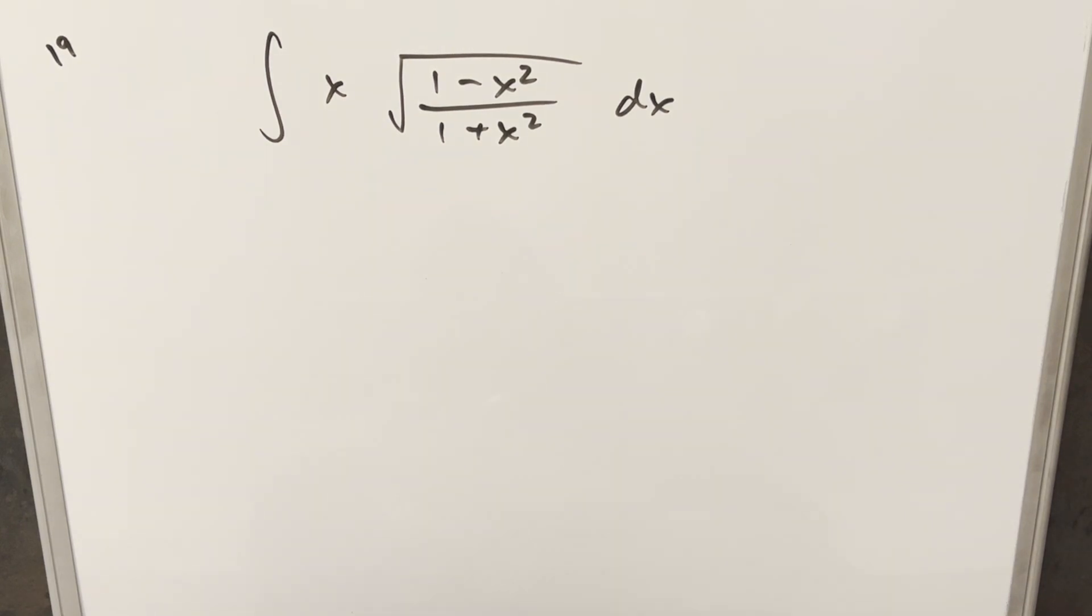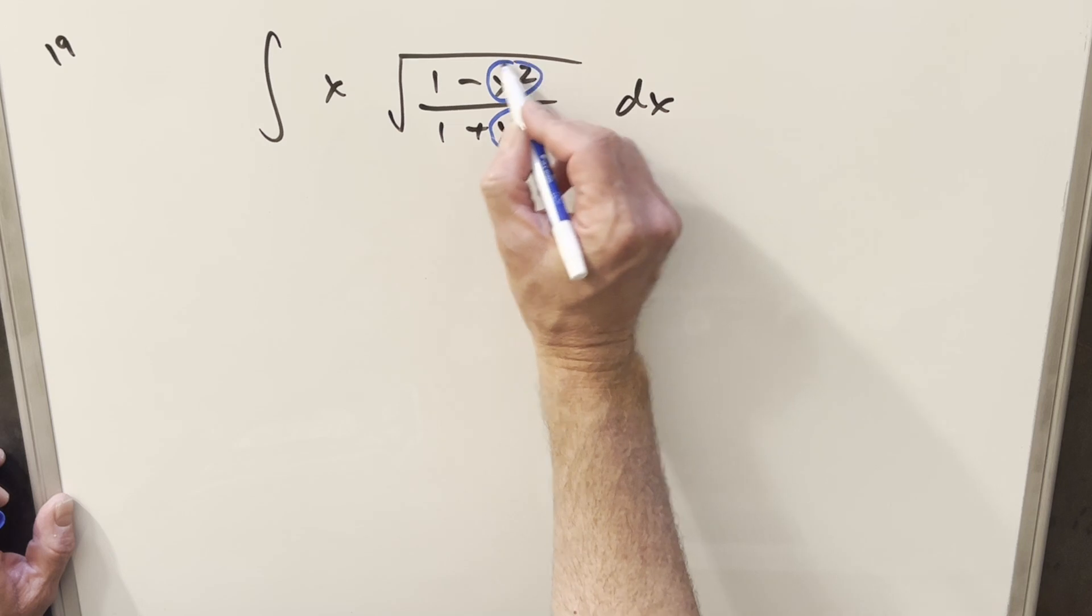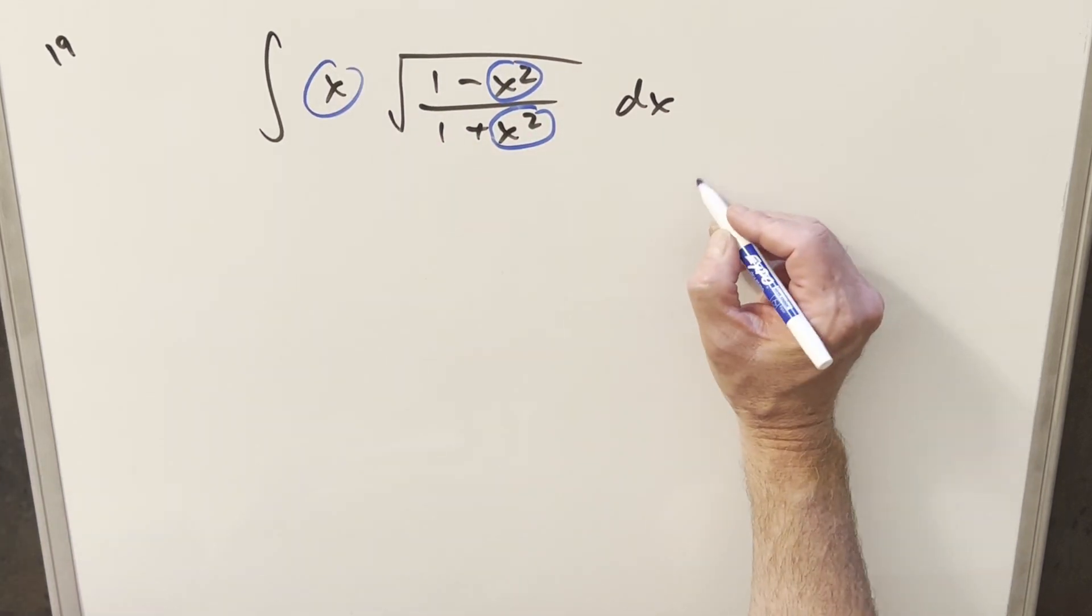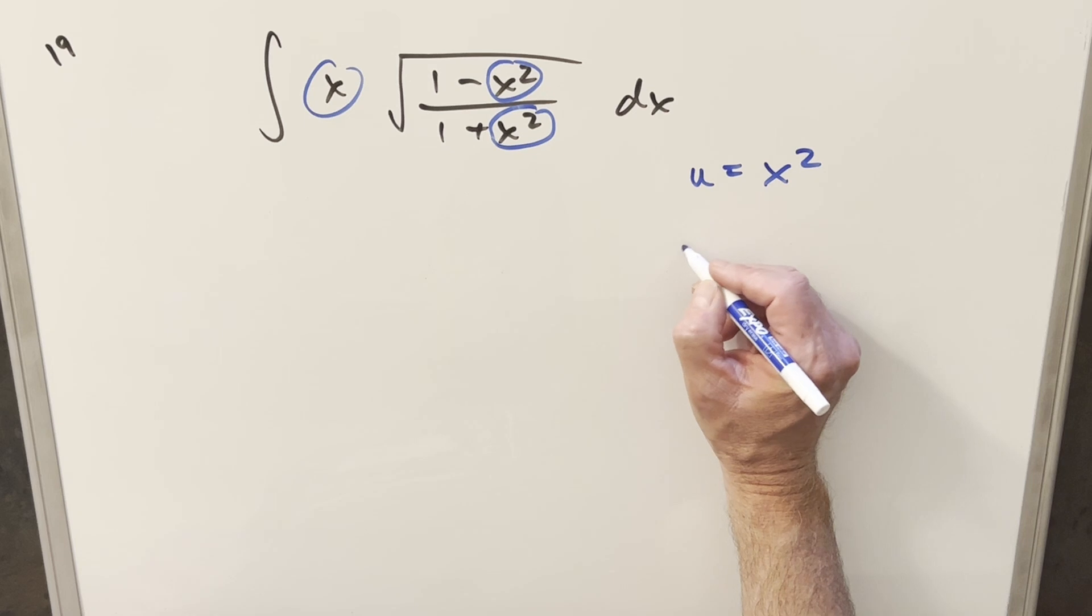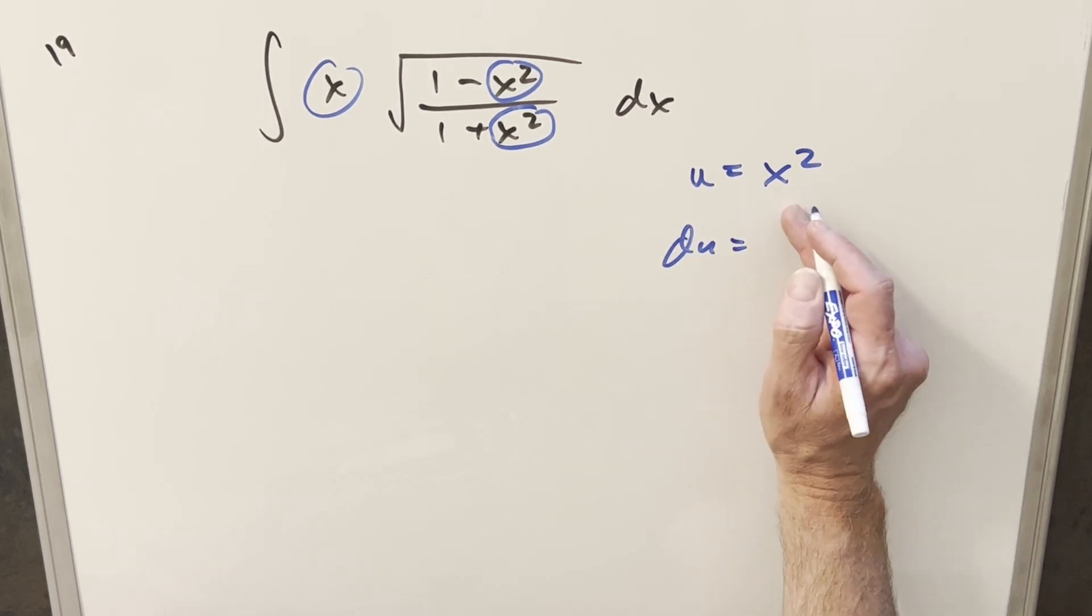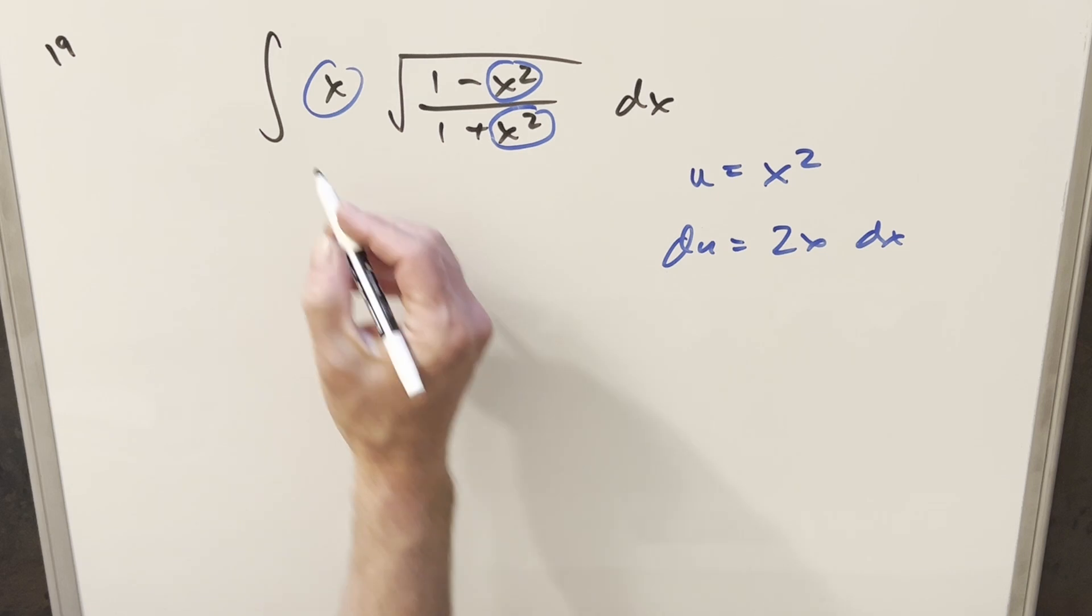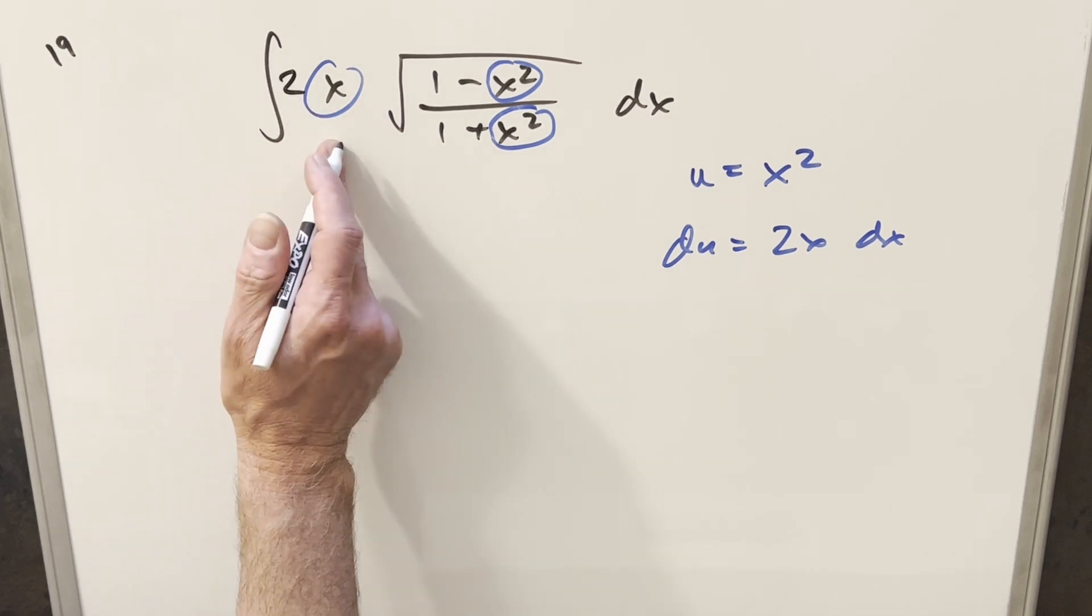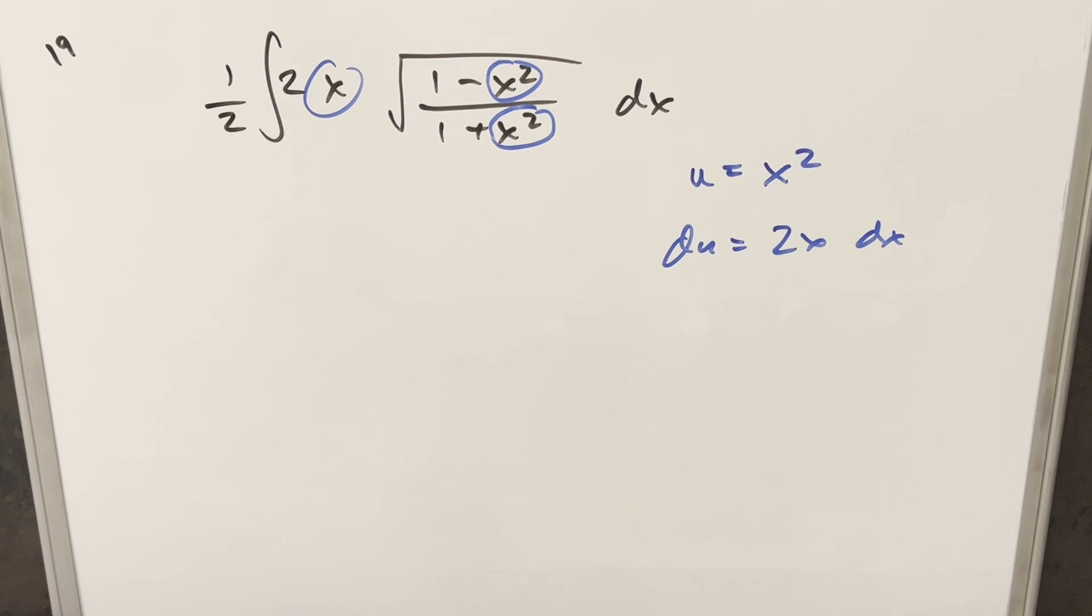I think what I might do to start is just use the fact that we have x squareds on the inside and we have this x term on the outside. So what that will allow me to do is if I do a u substitution for x squared, we take a derivative, then we're going to get 2x dx. Well, for the 2x, I can just create that right there, multiply it by 2, multiply a half up front so I don't change it, and then we can just go ahead and substitute.